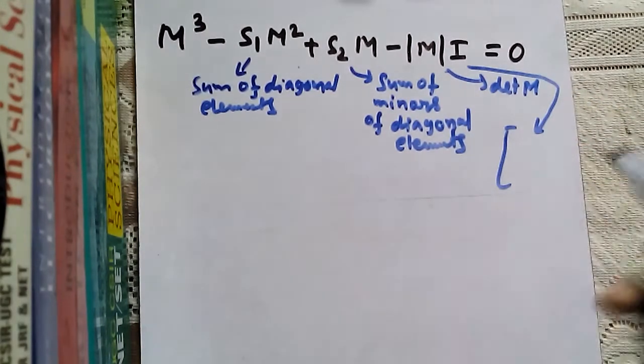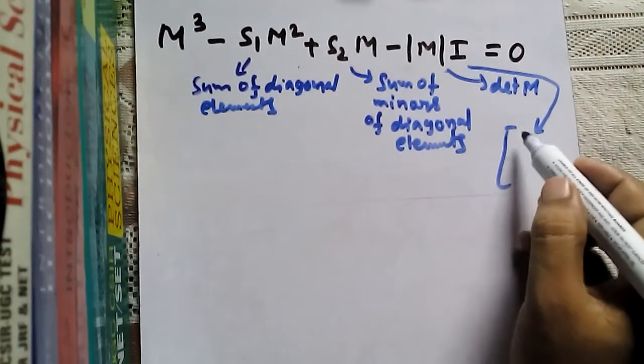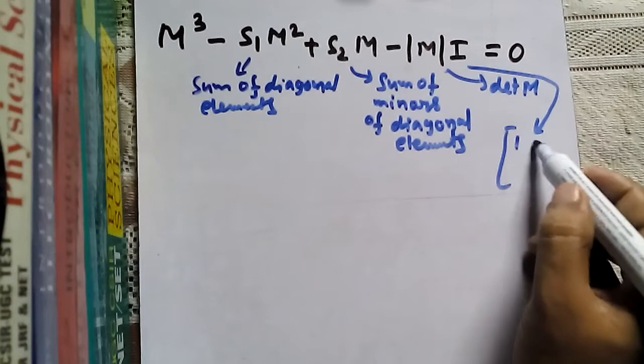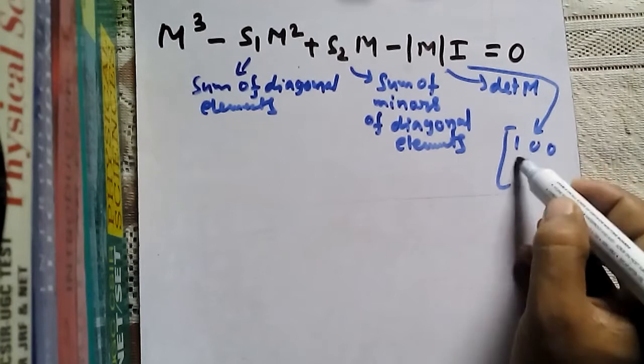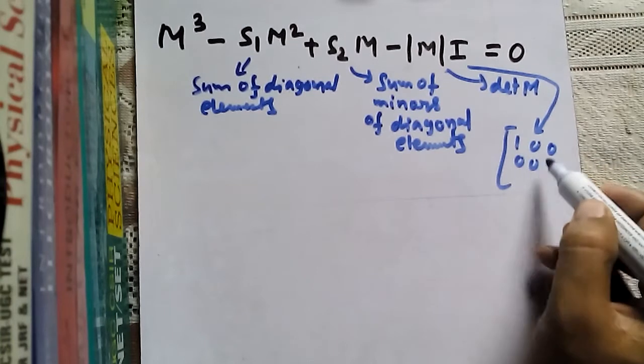Here, I is of order 3×3 because our main matrix is of order 3×3.